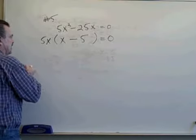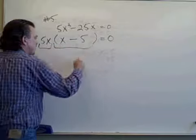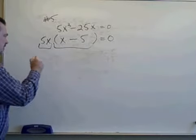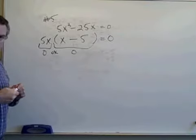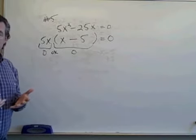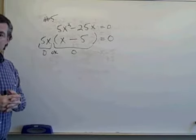Now, the product of this quantity times that quantity has to equal 0. So either this quantity is 0 or that quantity is 0. And those quantities only become 0 based upon what I put in place of x.